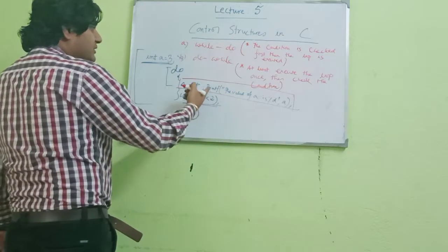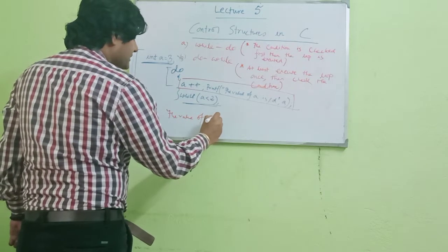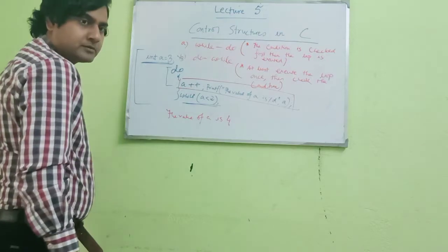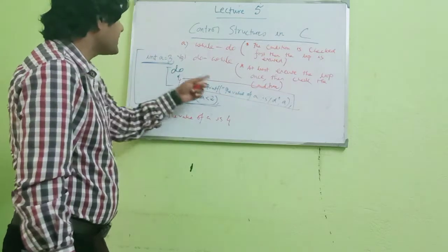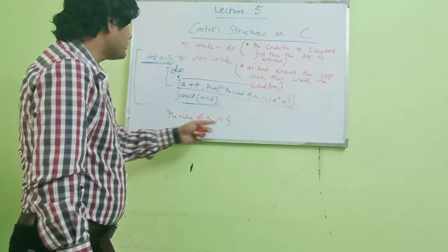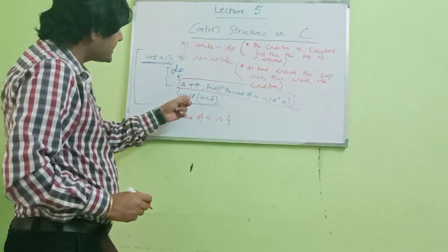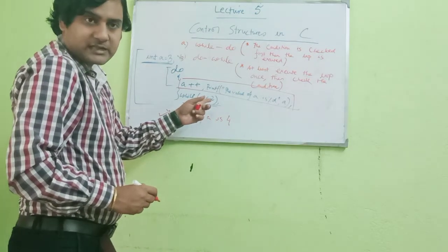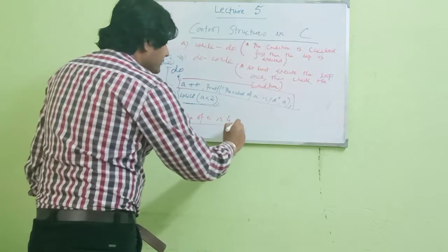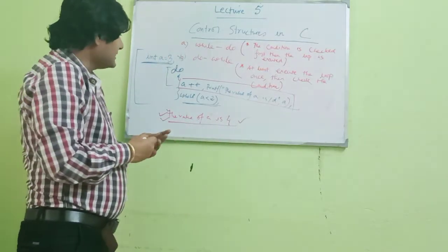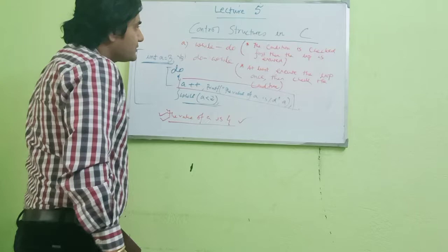So what should be the result? A was 3, a++ makes it 4, and so the output 'the value of a is 4' will be displayed. But next time, since a is not less than 2, the loop will not execute again. So only once, 'the value of a is 4' is displayed. All these codes will be shown to you in our practical class, so stay tuned and follow our channel for regular updates.